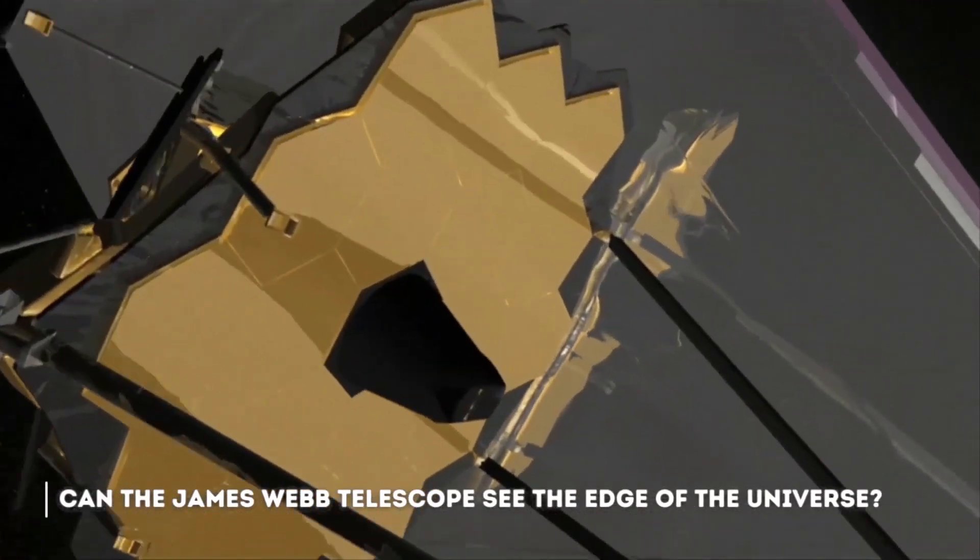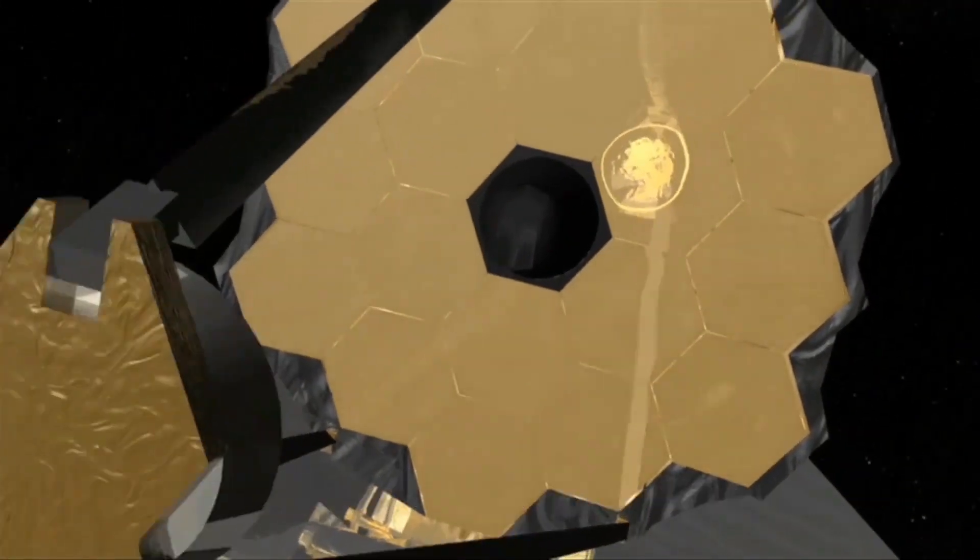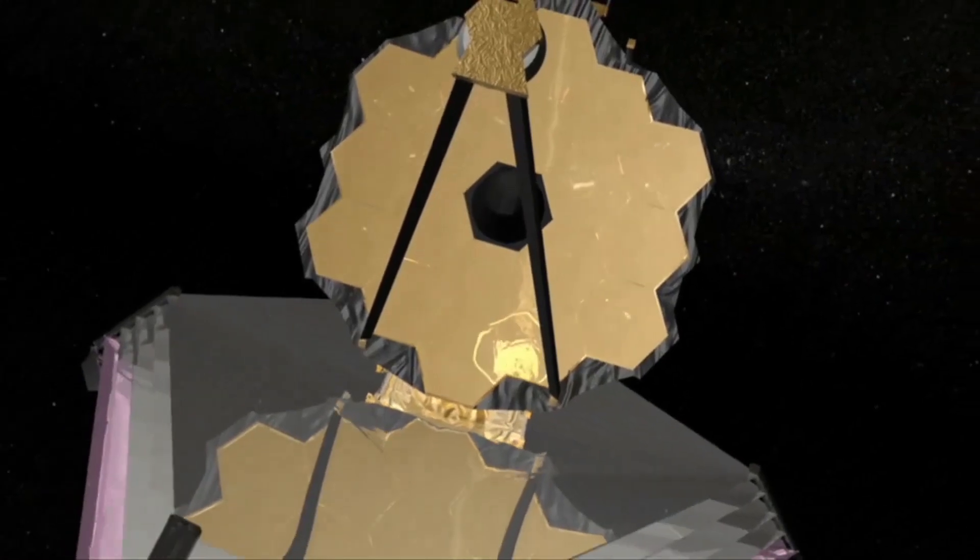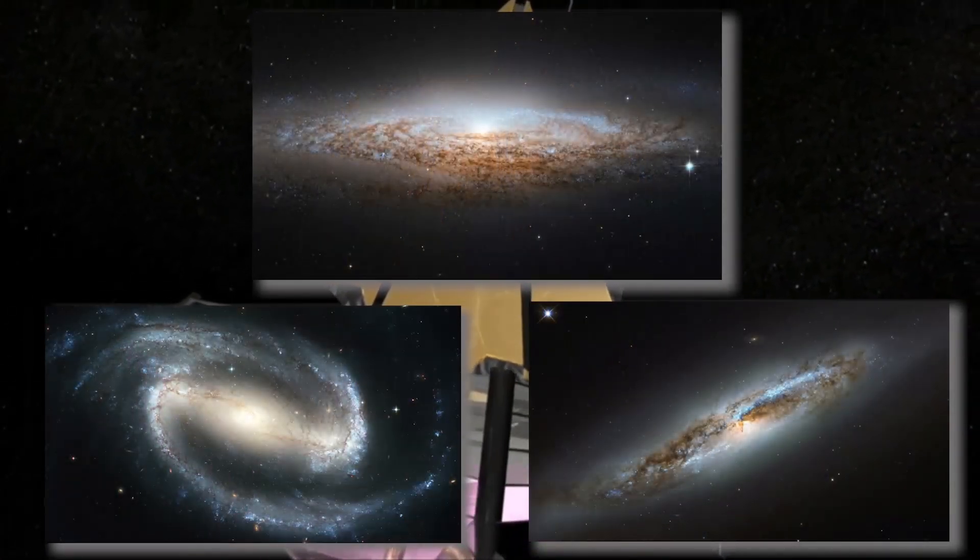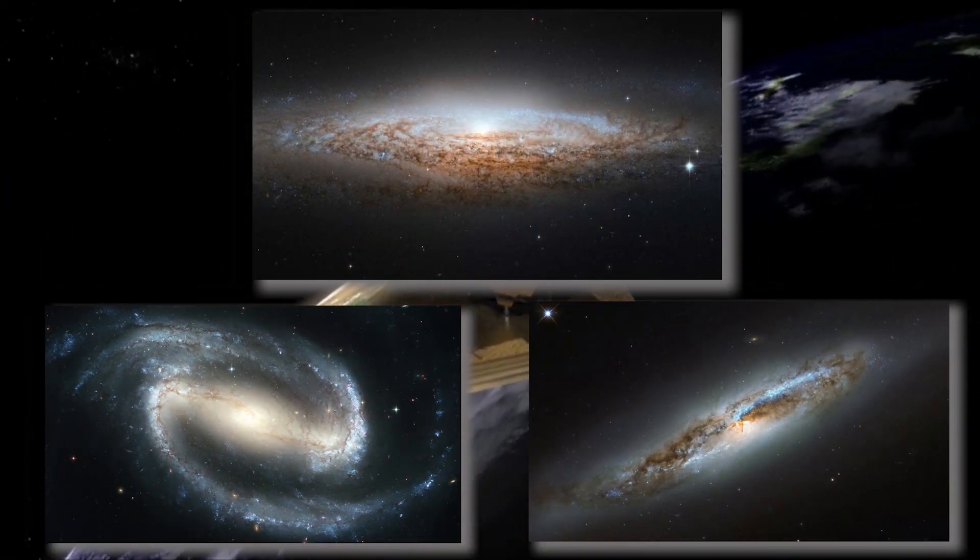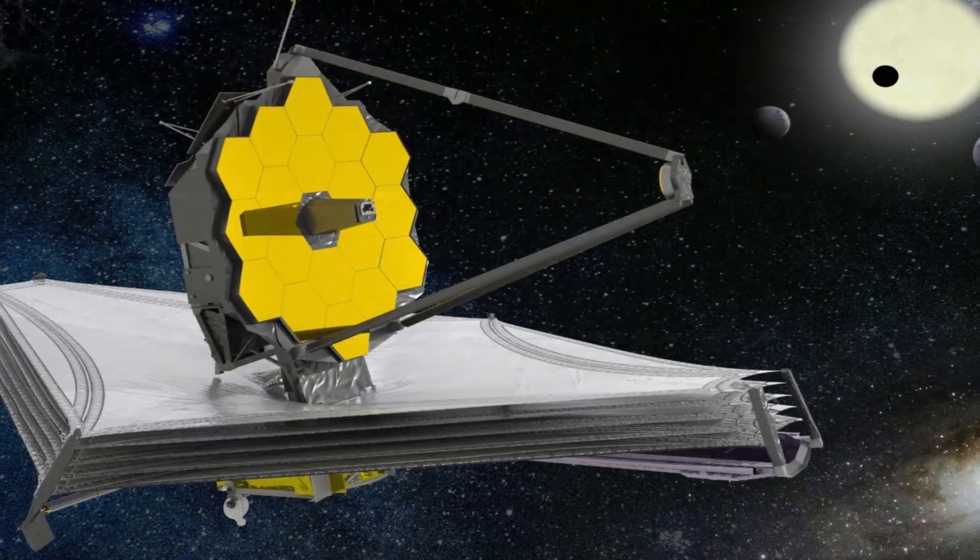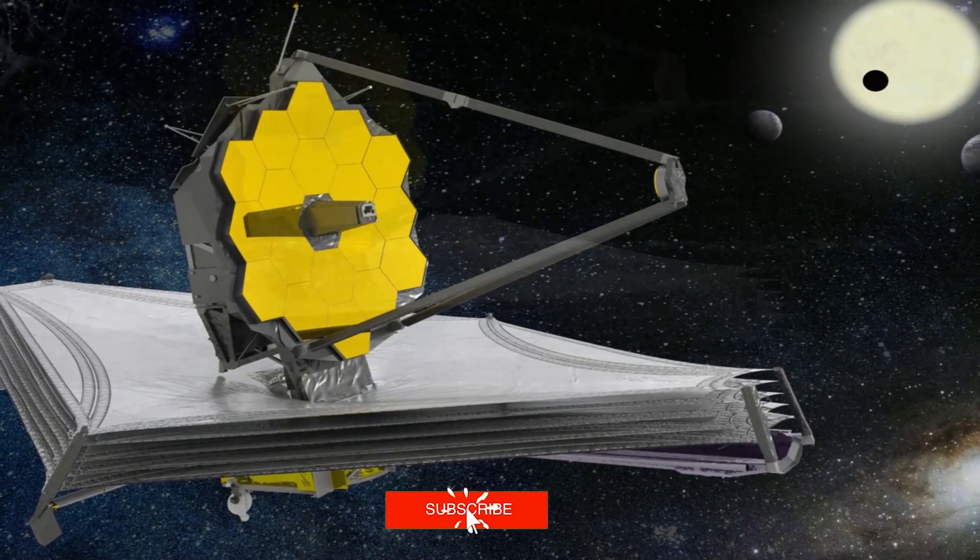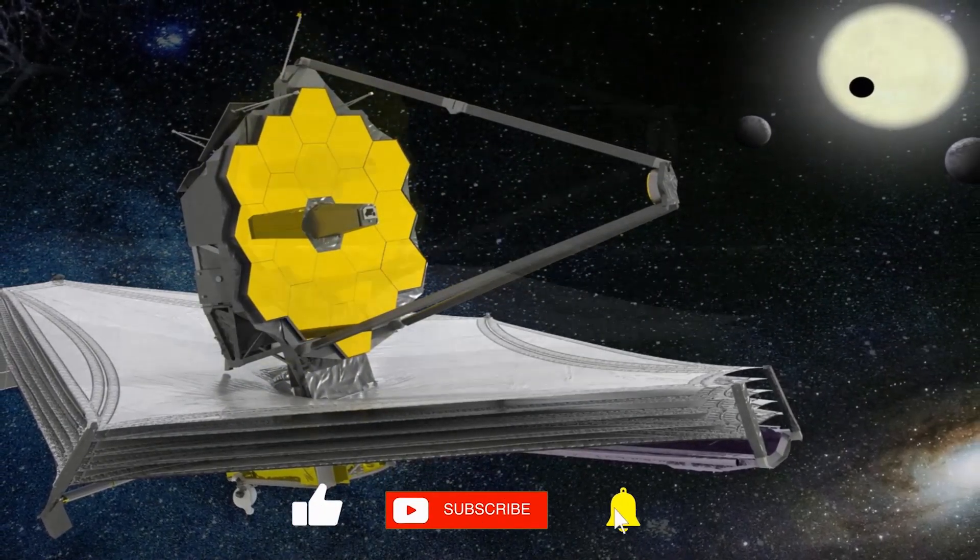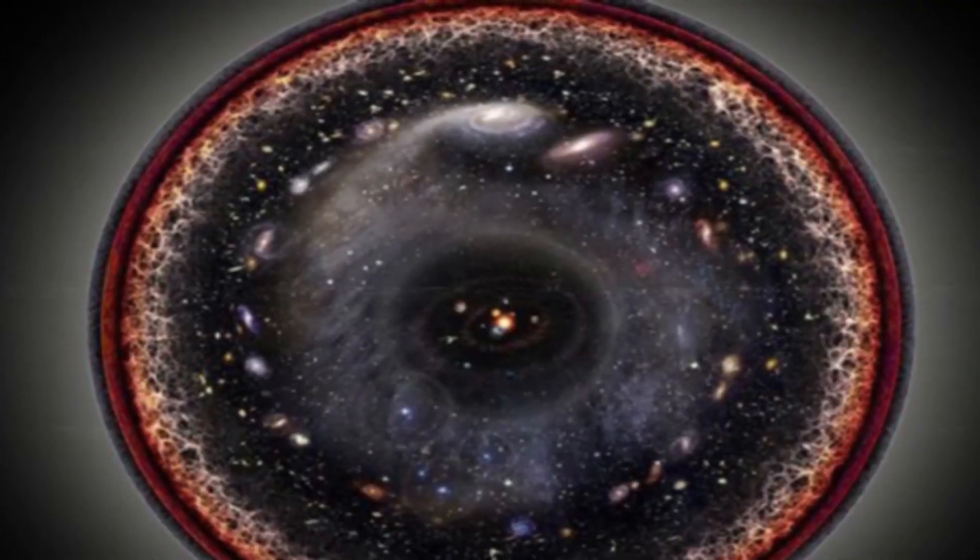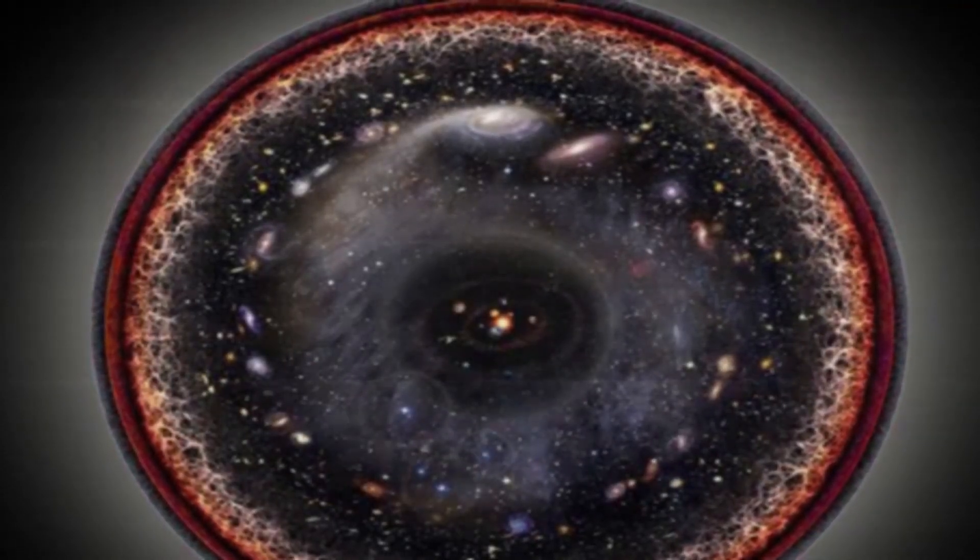Can James Webb Space Telescope see the edge of the universe? Being a hundred times more powerful than Hubble, it can detect the thinnest infrared light from the earliest galaxies in the universe, as well as planets and other stars in their habitability. However, we do not yet know what the telescope will observe when it is pointed towards the edge of the universe.